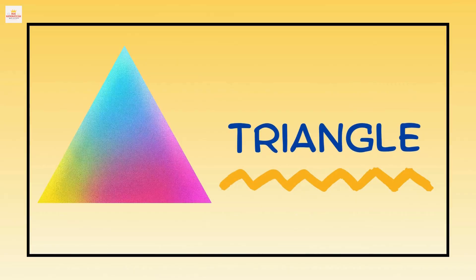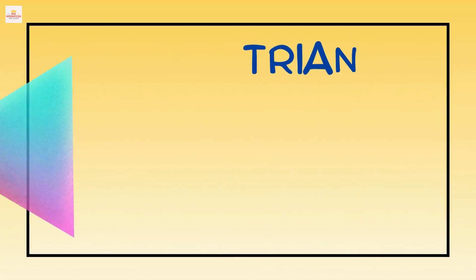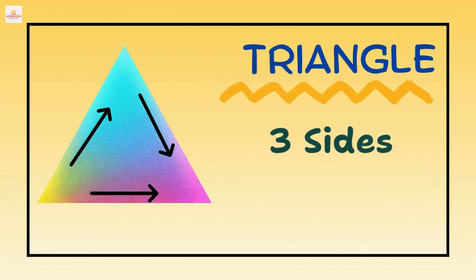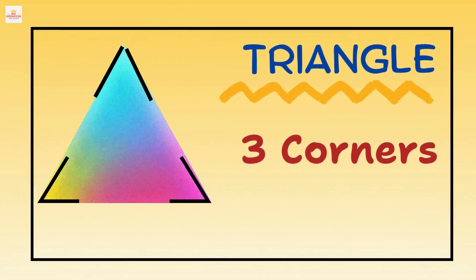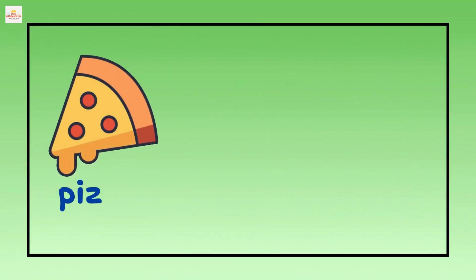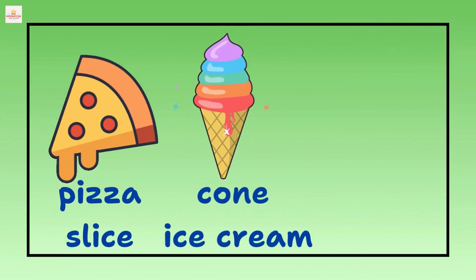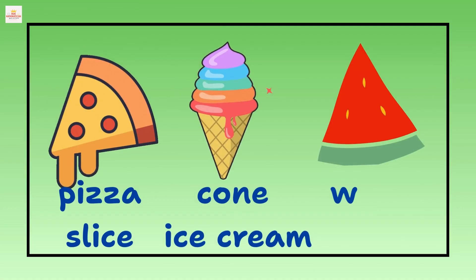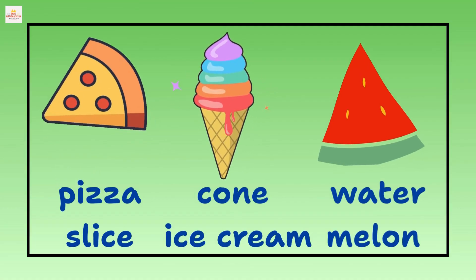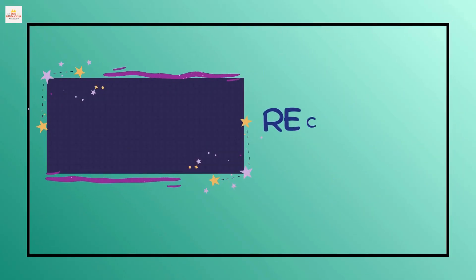This is a triangle. It has 3 sides and 3 corners. Triangles are in pizza slices, cone ice cream and watermelon slice. This is a rectangle.